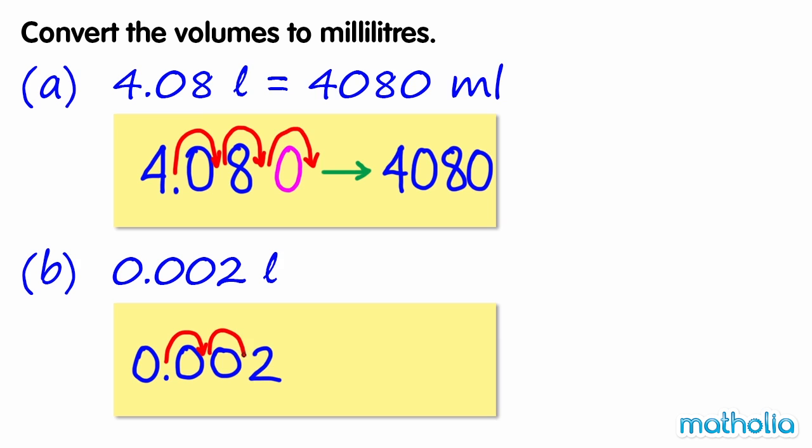Shifting the decimal point three places to the right gives us 2. So 0.002 litres equals 2 millilitres.